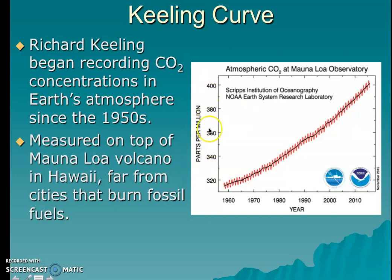You're going to be seeing this unit of measurement — parts per million, often abbreviated as PPM. What that means is: if you have a sample of air containing nitrogen, oxygen, methane, carbon dioxide, and whatever else is in that air sample, for every 1 million particles of air, approximately 320 particles would be carbon dioxide.